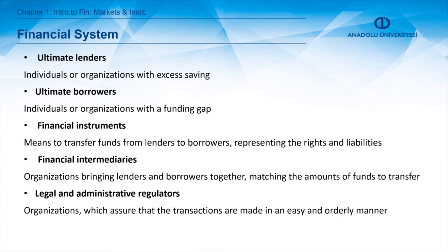Let's first go over what a financial system is and who the actors in the financial system are. The financial system enables actors in this market to come together. The main actors are ultimate lenders, ultimate borrowers, financial instruments, financial intermediaries, and legal and administrative regulators. The ultimate lenders are individuals or organizations with excess saving, meaning their income is greater than their expenditures.